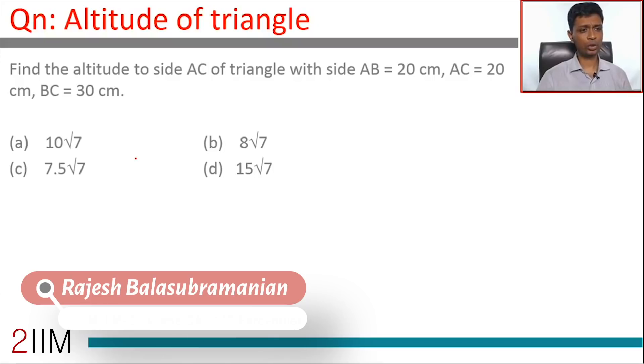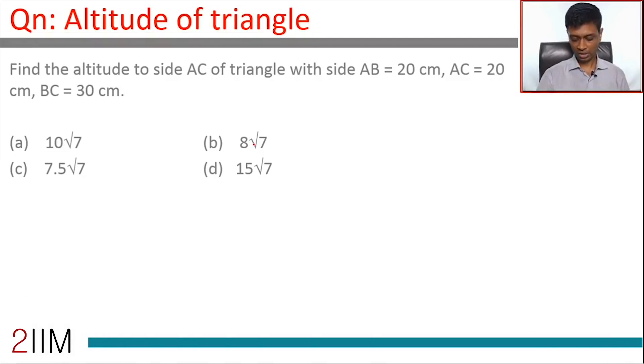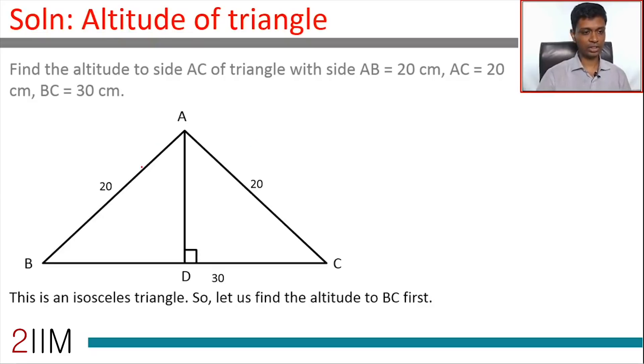Altitude of triangle. Find the altitude to side AC of triangle with sides AB equal to 20, AC is 20, and BC is 30. An isosceles triangle, that's a good thing. So let's start by drawing this triangle, 20, 20, and 30.